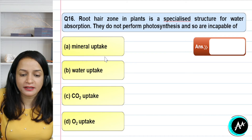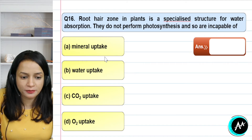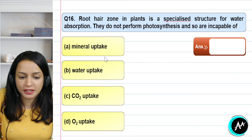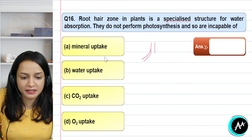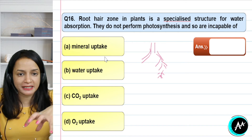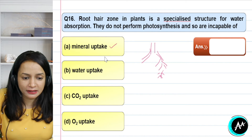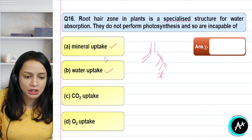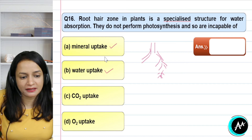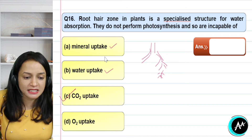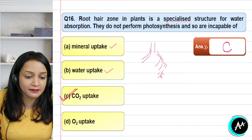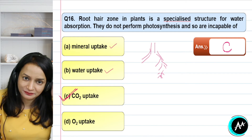Question 16: root hair zones in the plant are specialized structures for water absorption; they do not perform photosynthesis. Root hairs are the small hairs at the end of roots that penetrate deeply into the soil. They perform mineral uptake from the soil, water uptake, and oxygen uptake. However, carbon dioxide uptake has no role here — CO₂ uptake happens through stomata. The correct answer for question 16 is option C — carbon dioxide uptake.